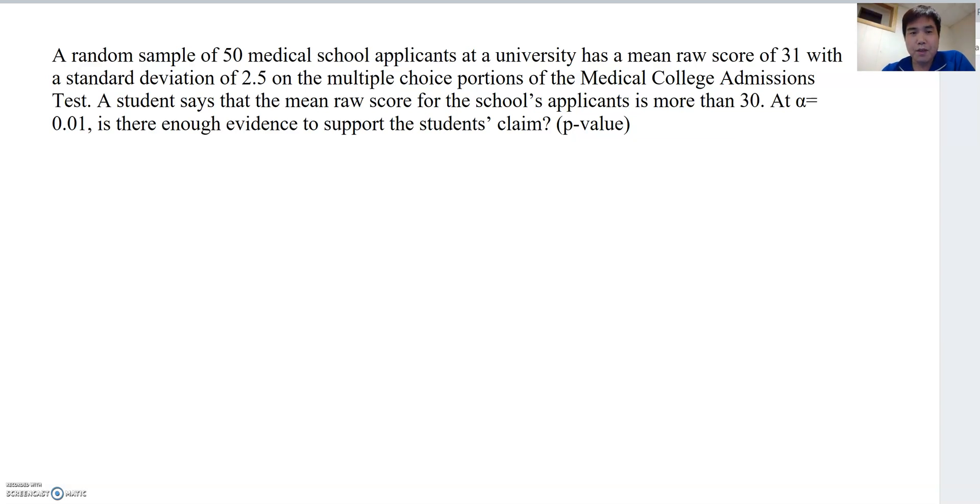We have a p-value problem. When we set up the hypothesis test, we need to determine whether this is a one-tail test or two-tail test. One-tail tests always include inequality phrases such as less than, more than, or at least, at most. If you see this kind of phrase, it's always one-tail. Do you see any inequality phrase here? Yes, more than 30.